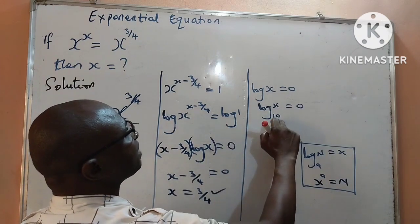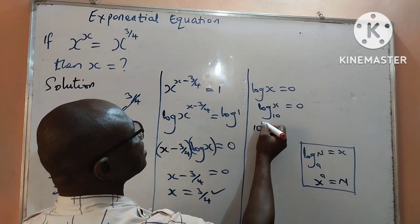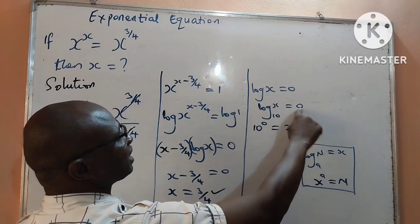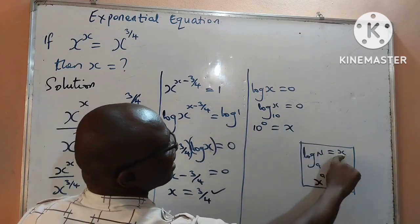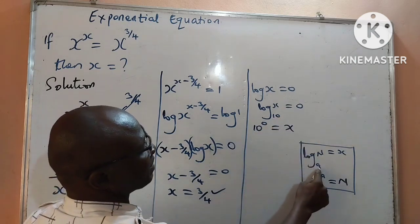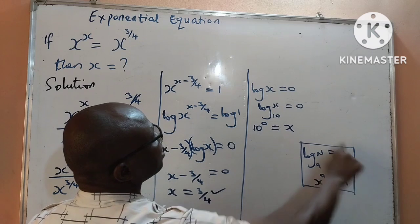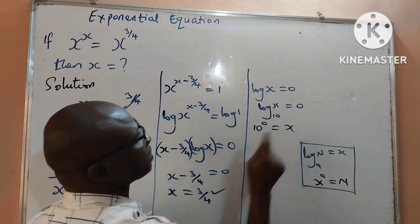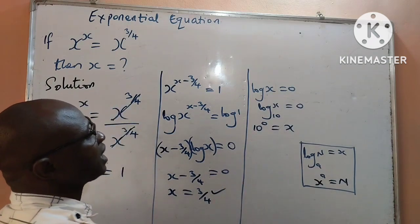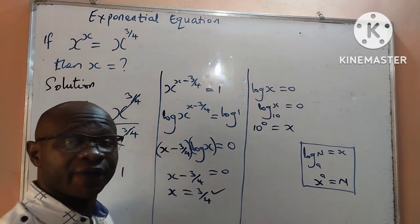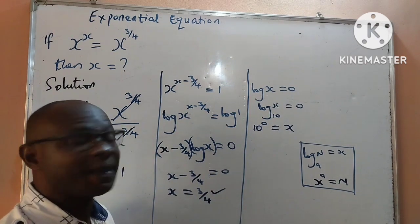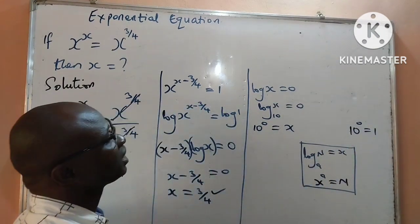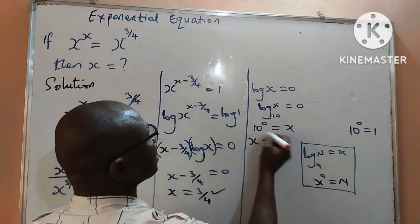Applying the definition of logarithms, it means 10 to the power 0 is equal to x. According to the law of indices, any number raised to power 0 is equal to 1. Therefore, 10 raised to the power 0 equals 1, and so the value of x here is equal to 1. That is our second value of x.